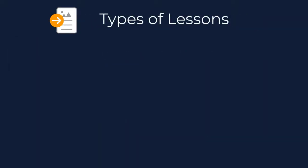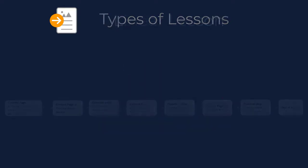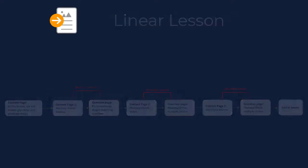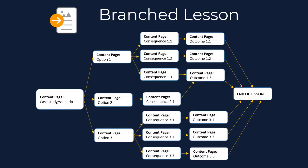Now let's look at two distinct types of lessons. There are two types of lessons that can be developed: linear and branched. In a linear lesson, students proceed through a series of questions or content pages and depending on their responses, they are rerouted back to review related content if they do not answer correctly. A branched lesson works a lot like a choose your own adventure activity and can send students down different paths depending on the choices they make. This type of lesson can be used to promote critical thinking and problem-solving skills. Students can be presented with case studies, scenarios, or situations in which they make decisions as they progress.